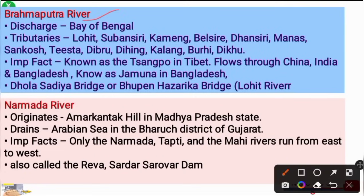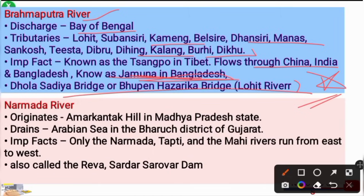The Brahmaputra River discharges into the Bay of Bengal. Its tributaries include Subansiri, Kameng, Balsiri, Dhansiri, Manas, Sankosh, Teesta, and Dibru. In Bangladesh, the Brahmaputra is called the Jamuna River. The Dhola-Sadiya Bridge, also known as the Bhupen Hazarika Bridge, is situated on the Lohit River.